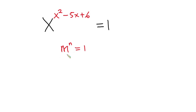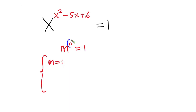In this video, we'll be considering three cases. The first case is m is equal to 1. Now considering this power n is positive — if m is equal to 1, then it doesn't matter how large this exponent is, it will still be 1. So one case is that m should be equal to 1.